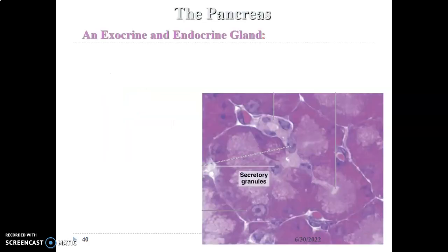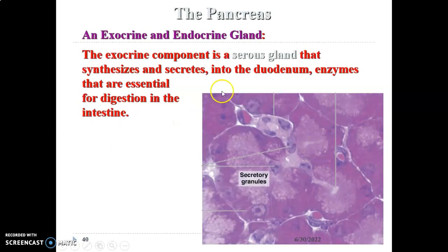Remember, the pancreas is both an exocrine and endocrine gland that is located on the C-shaped part of the duodenum. It has a head, a neck, an uncinate process, a body, and a tail that is located at the hilum of the spleen.